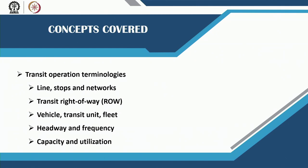The concepts to be covered in this lecture include some basic definitions and formulas for lines, stops, networks, how do you define transit right of way, what is a vehicle, what is a transit unit, and some operational factors of public transportation including headway, frequency, capacity, and utilization. These are very specific terminologies that have to be remembered in the case of public transportation. A good deal of attention needs to be paid to these terminologies.